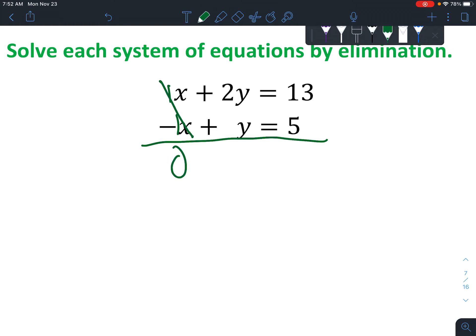1x minus x is 0x. Whenever you have just a blank variable, just remember that there is a 1 in front. 2y plus 1y is 3y. And then 13 plus 5 is 18. Now we can divide both sides by 3 to get 6.